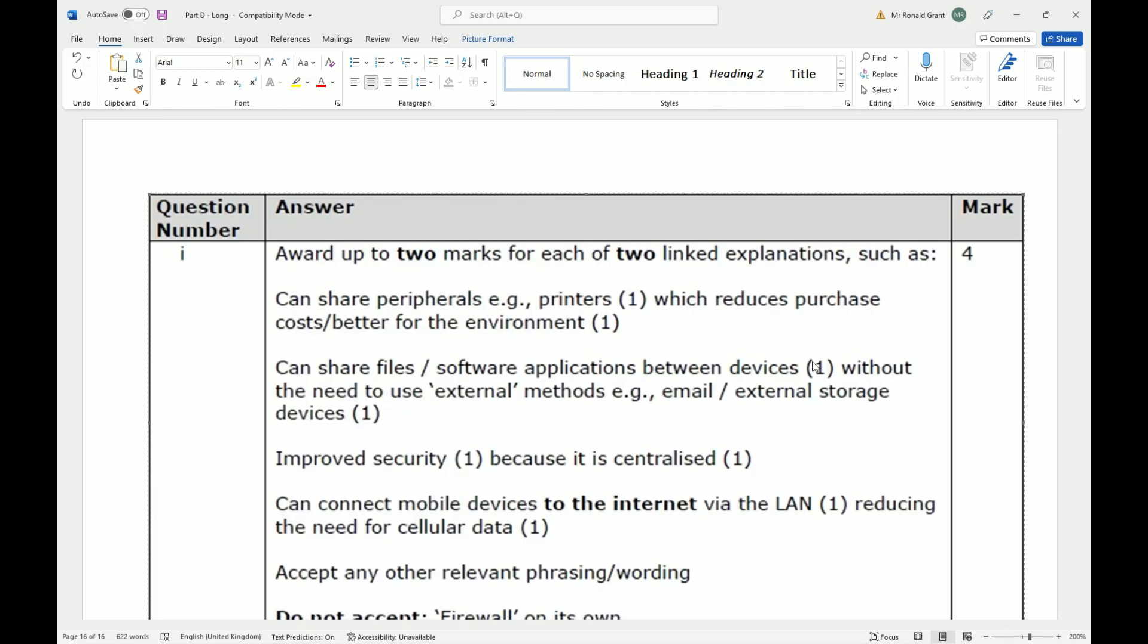Here are some of the benefits: Can share peripherals, for example printers, which reduces purchase costs and is better for the environment. If she has a LAN, she can connect that one printer to the Wi-Fi network, and everyone will be able to print to that same printer. They each don't have to buy a printer to have in their rooms. It's better for the environment—you're buying less stuff. When a printer eventually breaks, you're throwing away less stuff, throwing away one printer versus four if it's a family of four.